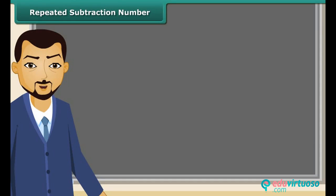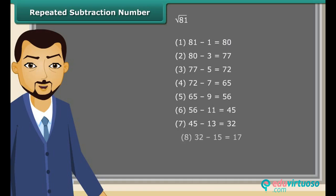We can find the square root of a given number using repeated subtraction method. It is really easy. Consider the square root of 81. Just subtract successive odd numbers from 81 starting from 1 till the difference becomes 0. So you have noticed it took 9 steps to get the difference as 0. Therefore, the square root of 81 is 9.